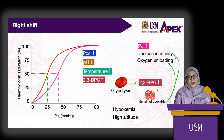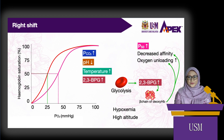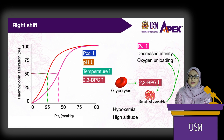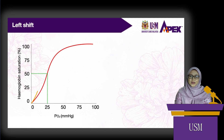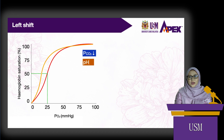So there are primarily four factors that can shift the curve to the right: high PCO2, low pH, high temperature, and high 2,3-BPG. The factors that shift the curve to the left are the opposite: low PCO2, high pH, low temperature, and low 2,3-BPG.